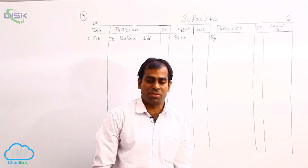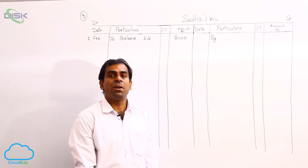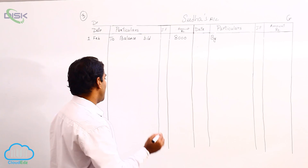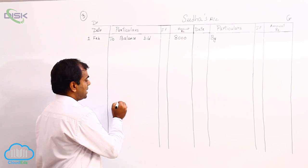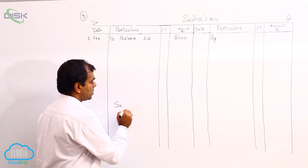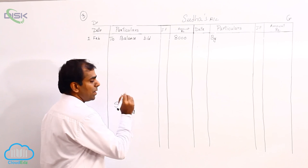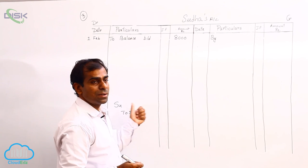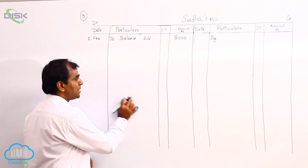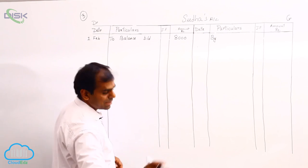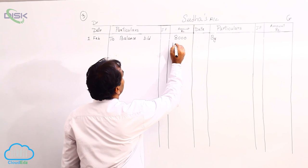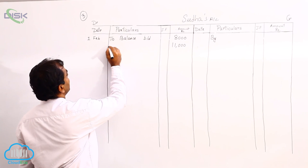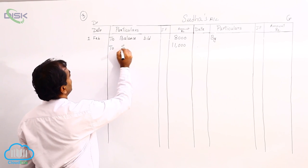Let us see the next transaction: sold goods to Sudha. When you sell goods to Sudha, you all know the journal entry — it is Sudha to Sales. Looking at this, you know you are debiting Sudha's account. So on the debit side, we enter the amount of sales, which is 11,000. We are debiting Sudha's account with 11,000, and the reason for debiting her account is that you are debiting Sudha's account.